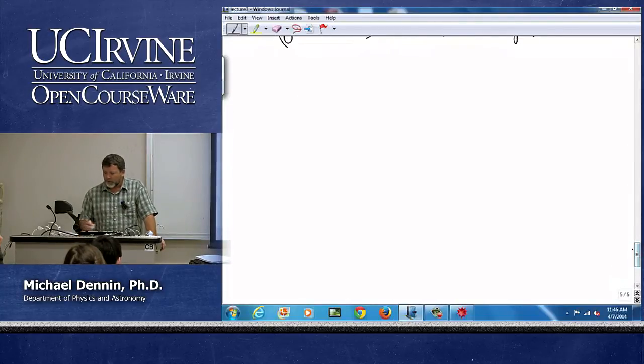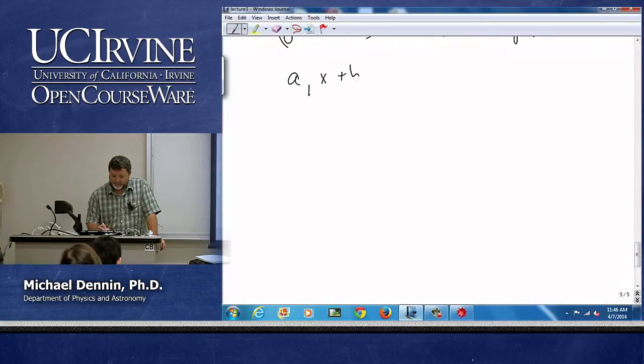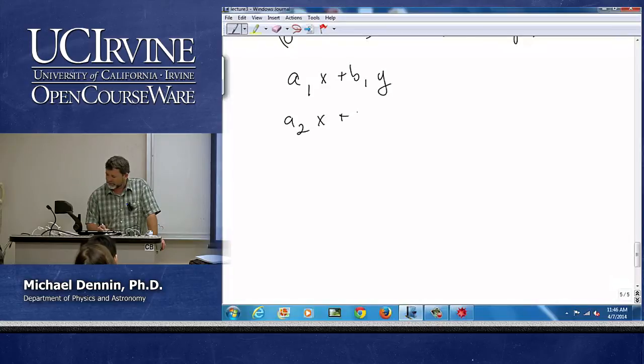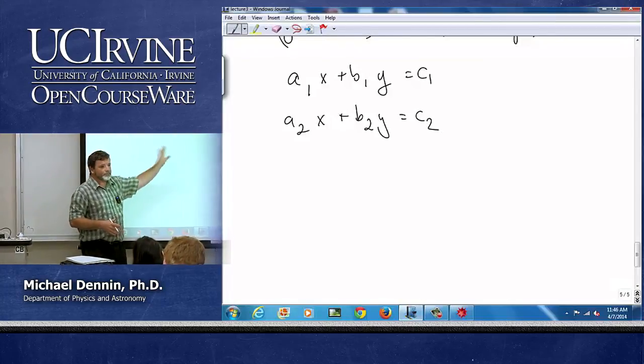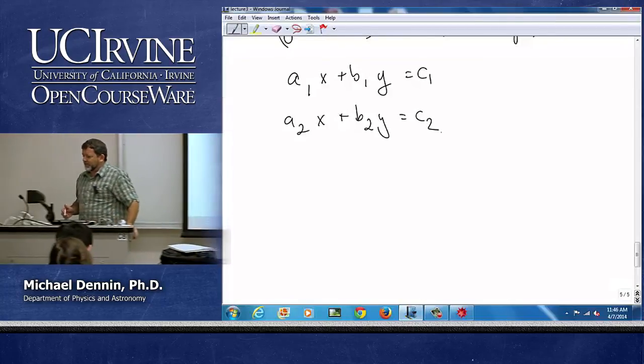And so looking at that, one of the cool things is we can write a formula for solving the simplest system of linear equations. It's called Cramer's Rule.